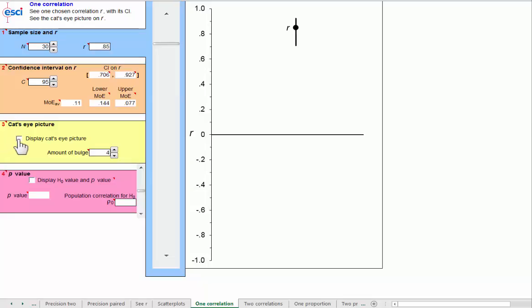Now I can click at red 3 to turn on the cat's eye picture, and there it is. So a little asymmetric because the confidence interval itself is asymmetric. The upper moe is shorter than the lower moe, and to a greater extent as we get closer to 1. As we come down here towards r of 0, the confidence interval gets closer to symmetric, and there it's entirely symmetric. These two arms are the same length. And if I go down to negative values of r, once again it's asymmetric and getting shorter as we get down towards the floor at minus 1.